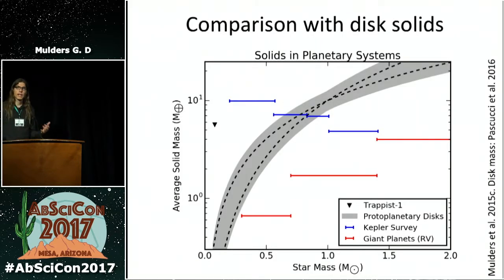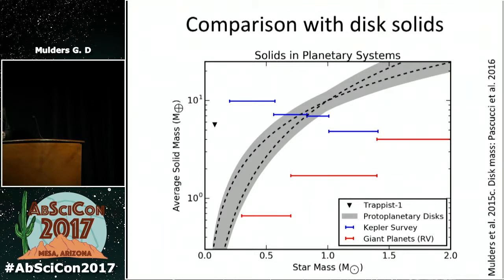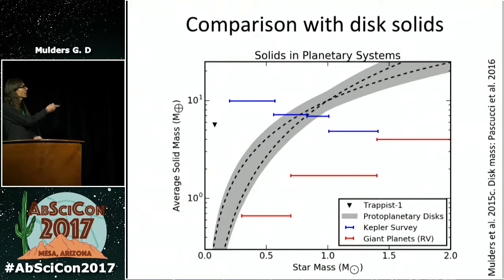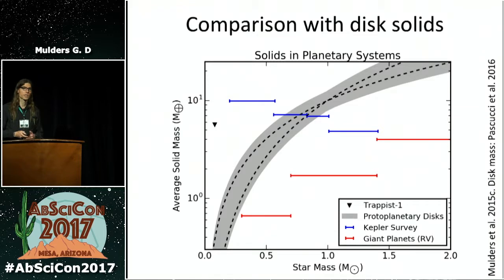Putting this in the context of previous planet formation theories, and also of the dust masses of protoplanetary disks that will be discussed later in this session, we see that the amount of dust in protoplanetary disks increases with stellar mass and previously matched well with giant planets found around more massive stars. But for lower-mass stars, this doesn't hold — we find a lot of material very close to the star locked in these planetary systems, and we don't quite understand why they form so efficiently.